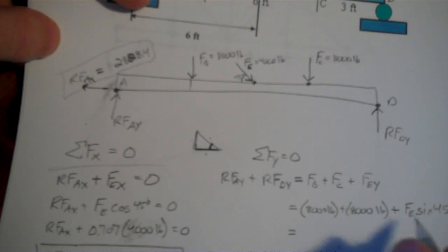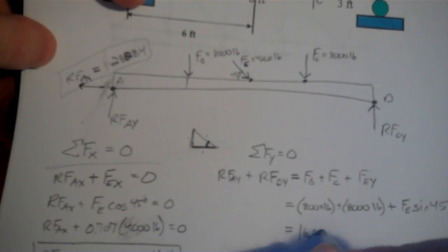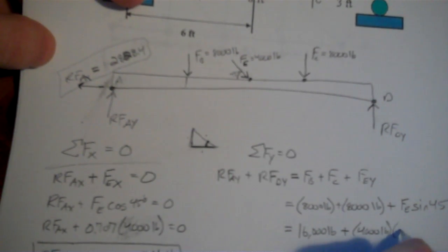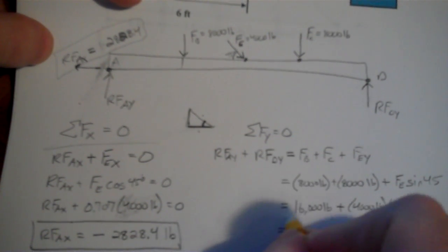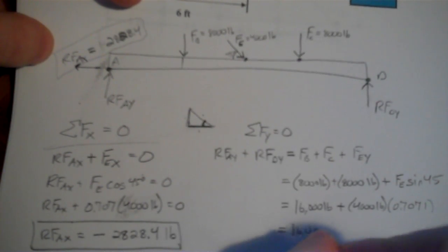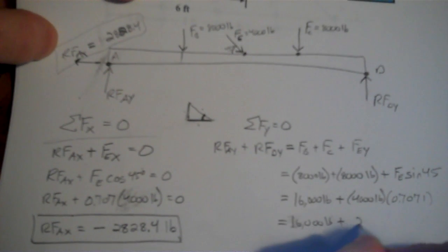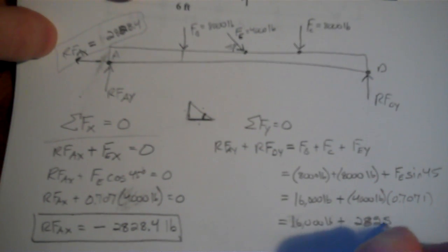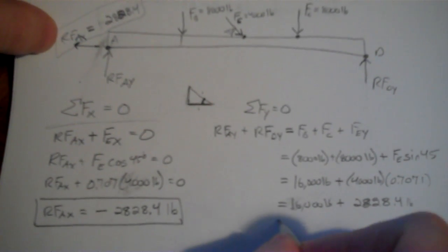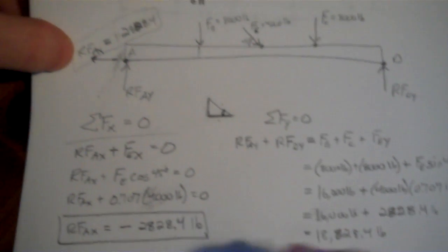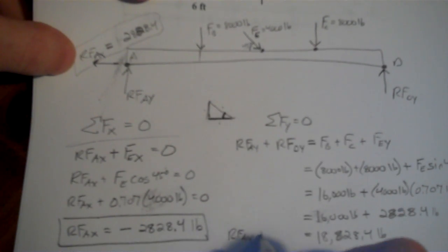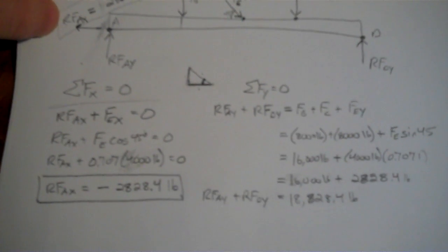All right, so I have 16,000 pounds from these two added up, plus our 4,000 pound at an angle. 0.7071 something-ish. If you have your calculator, you can plug that in. But I have basically 16,000, I'll write this out. Show all my work. Be detailed. Plus the 2,828.4 pounds-ish. So that's 18,828.4 pounds. Now that's the combination of RFAy and RFDy. That's both of those combined. Now we still can't solve for these individually. Luckily, we have one more equilibrium equation.